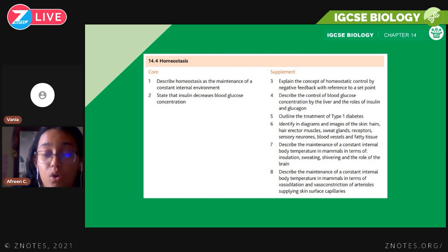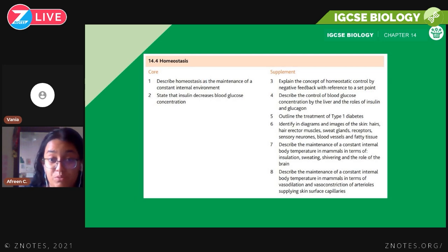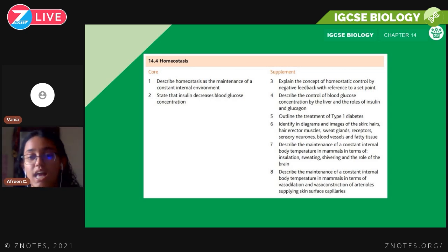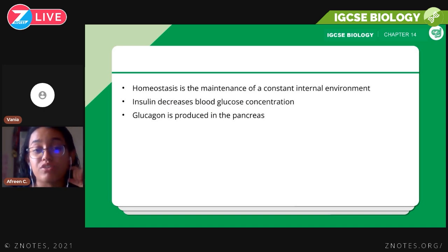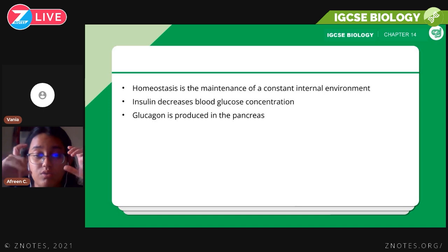Now we look at homeostasis. Homeostasis is the maintenance of a constant internal environment. Insulin decreases blood glucose concentration. We'll also look at glucagon, a hormone also produced in the pancreas, and how your body adapts to temperature fluctuations to maintain a constant internal environment.